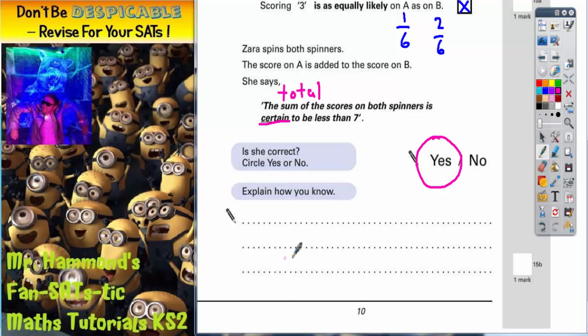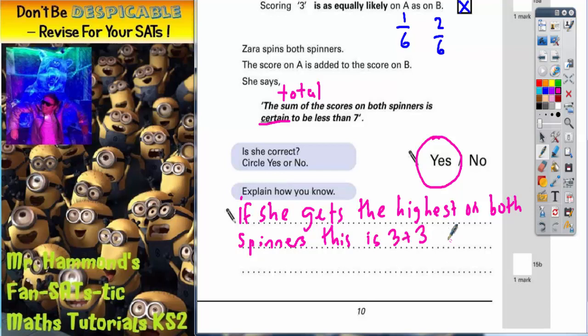Now we need to explain it. And we say if she gets the highest on both spinners, this is three plus three equals six. So the biggest total is six.